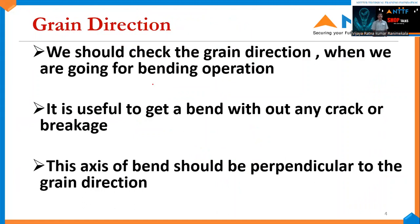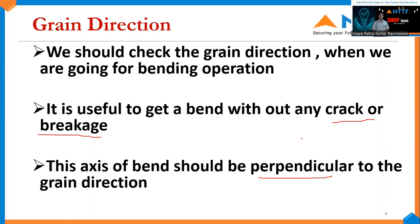We may have a doubt: why is Grain Direction important and where is it applicable? We have to check the Grain Direction whenever we are going for any bending operation. It is useful to get the bending radius without any cracks or breakages, with an accurate surface finish. We have to do the bending operation perpendicular to the Grain Direction to generally avoid breakages and cracks.